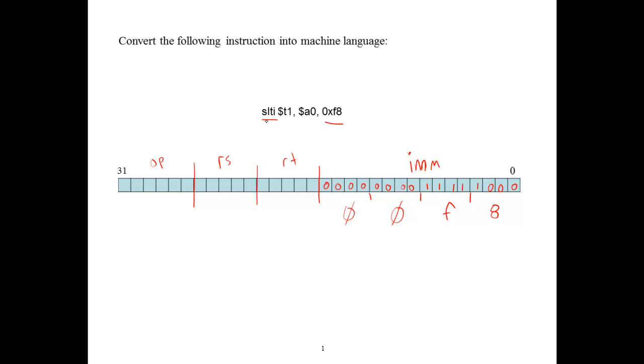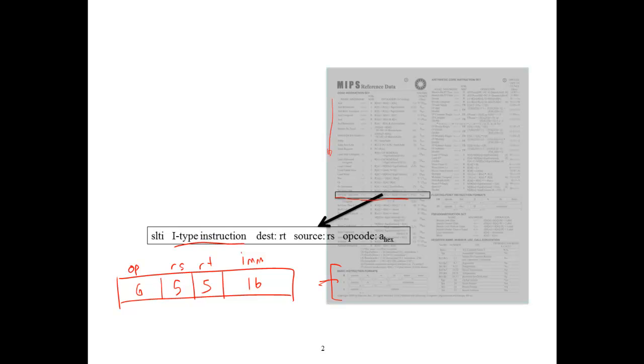With that done, we can turn our attention back to the opcode field. So again, we're doing a set if less than instruction. If we refer to our table, the set if less than instruction is going to specify how to encode that opcode. In this case, it's the letter A in hexadecimal.